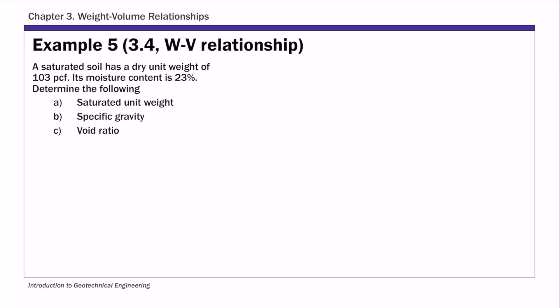Hello everyone. This is example number five of chapter three. For this example, you are given a saturated soil with its dry unit weight and moisture content, and you're going to determine the saturated unit weight gamma-saturated, specific gravity GS, and void ratio E.